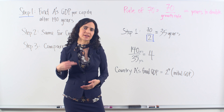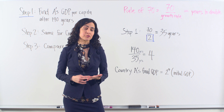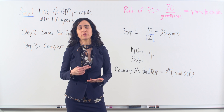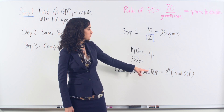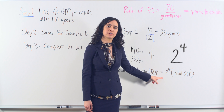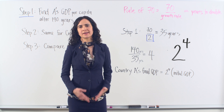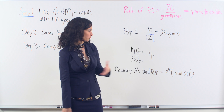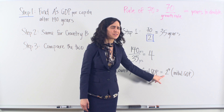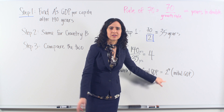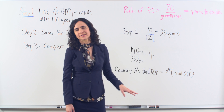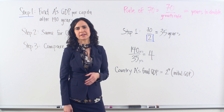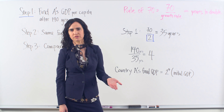Over the time horizon of 140 years, country A will double four times and will therefore grow by a factor of 2 to the fourth, or 16. Now, it's probably right about now you want to call a timeout — where on earth did that 2 to the fourth come from? Honestly, this is a really confusing concept. It tripped me up back in the day as well, so we're going to go over it right now.